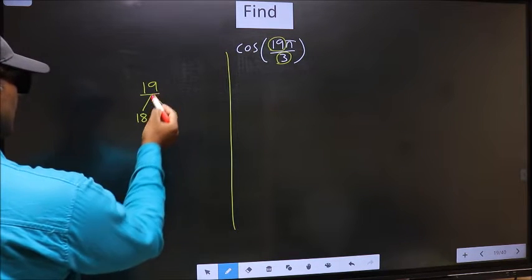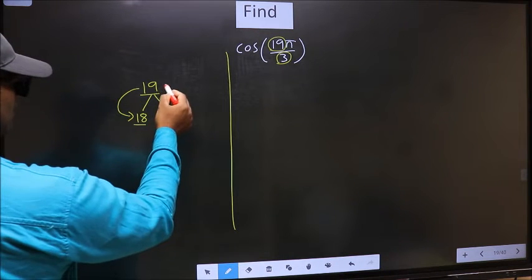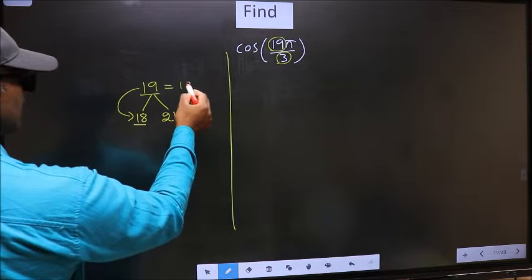So now 19 is close to which number? This is close to 18. So now 19 should be written as 18 plus 1.